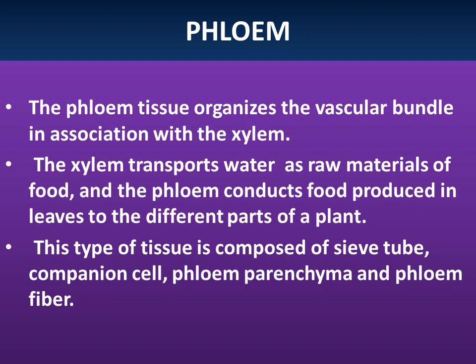This is a structure of phloem. The phloem tissue organizes the vascular bundle in association with the xylem. The xylem transports water as raw materials of food, and the phloem conducts food produced in leaves to the different parts of a plant. This type of tissue is composed of sieve tube, companion cell, phloem parenchyma and phloem fiber.